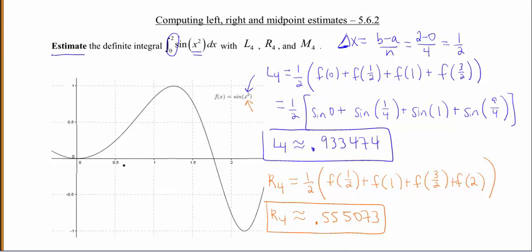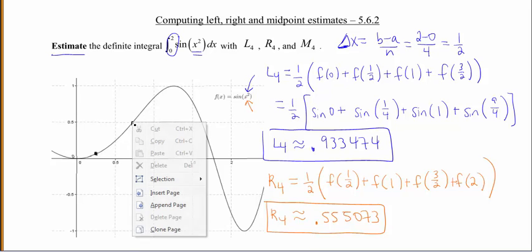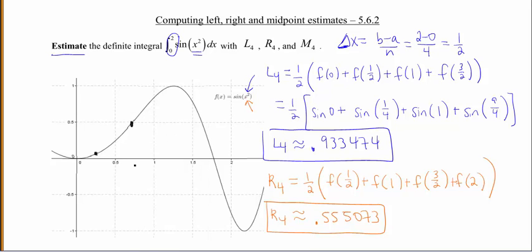Now midpoints. So I've still got my 0 to 0.5, 0.5 to 1, et cetera. But now I'm going to want to use the midpoint of this interval. So that's going to be like about right in there. Then my midpoint here's going to be about right here. My midpoint here is about at my height of my function there. And then my midpoint here is about right in here.